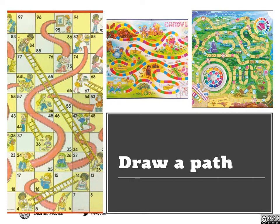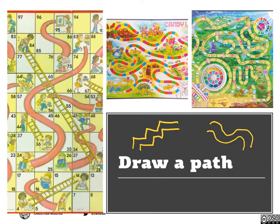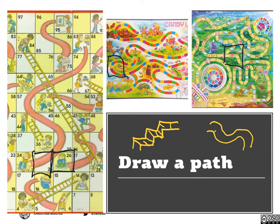We're going to start by drawing a path. You could make any kind of path you want — it could be geometric or it could be sneaky. Something you might want to notice is that in all of these games they have sections for moves, so you're going to want to be sure that you include sections in your path. This path seems to be more of a staircase at this moment, and the sneaky one turns out to be a little bit easier.